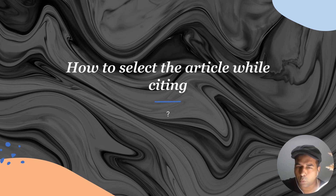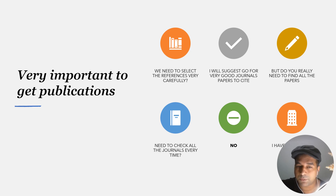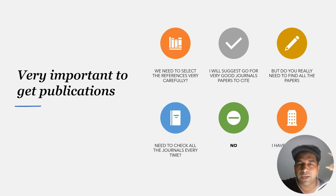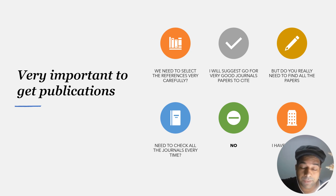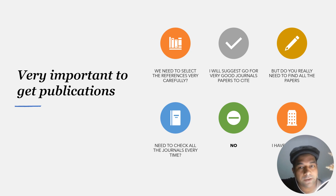How to select the article while citing — that's a very important point. We need to select references very carefully. You should go for very good journal papers to cite. But do you really need to find all the papers all the time? This is very time-consuming, and you cannot waste this important time just searching for good journals. Let's say you have almost 120 references — checking all 120 papers for journal quality is very time-consuming.